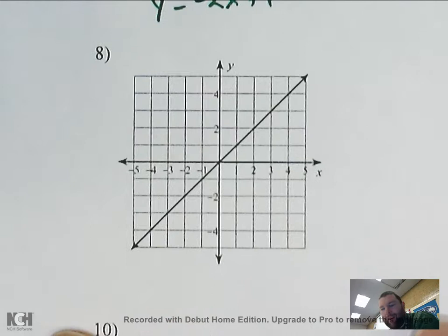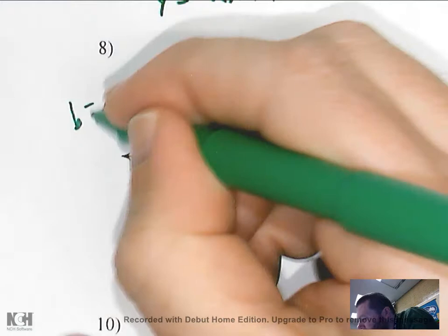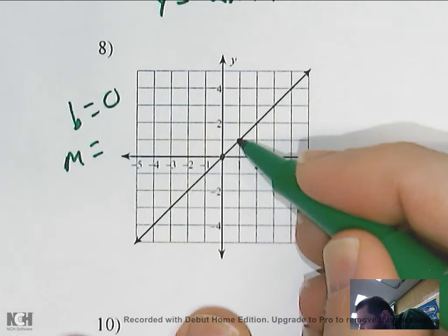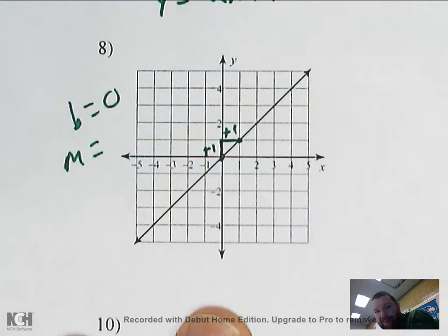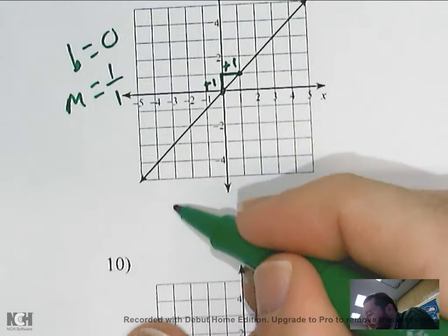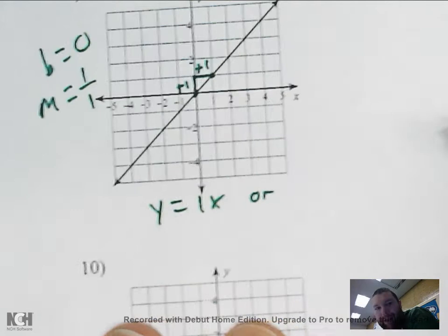This one looks like it hits right at zero, so my y-intercept would be zero. My slope looks like it's going up one over one — plus one, plus one — so my slope would be one over one, or just one.